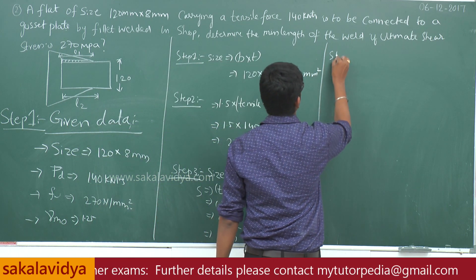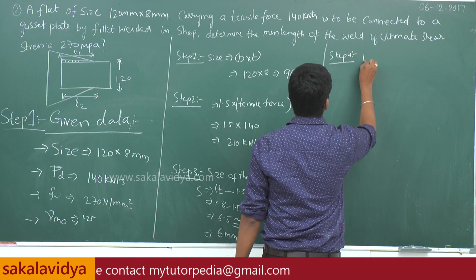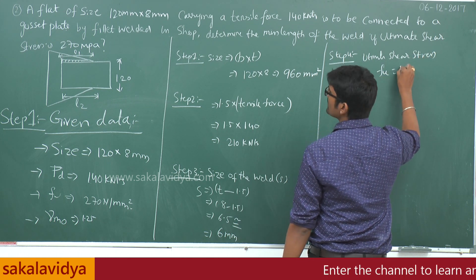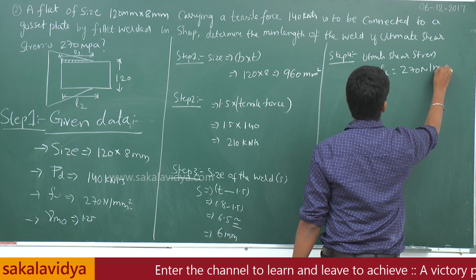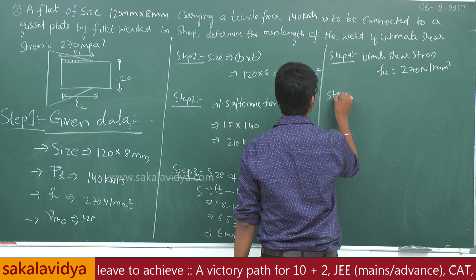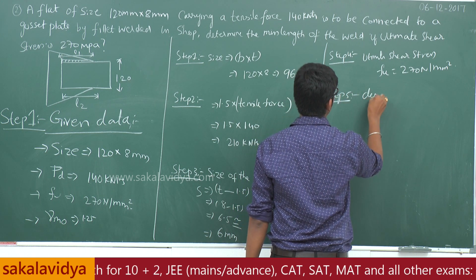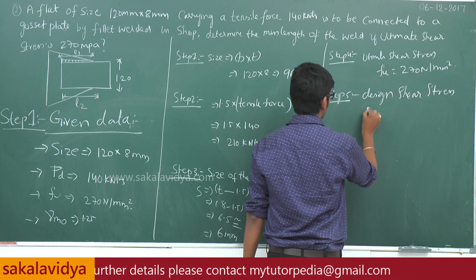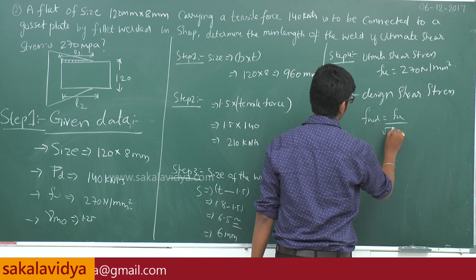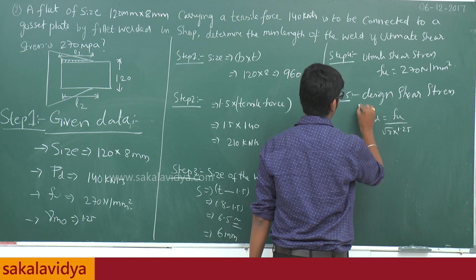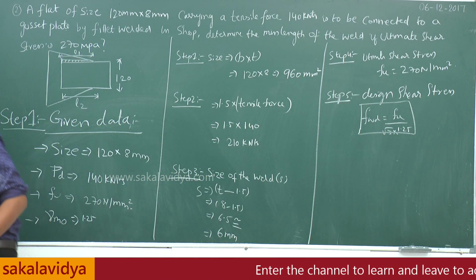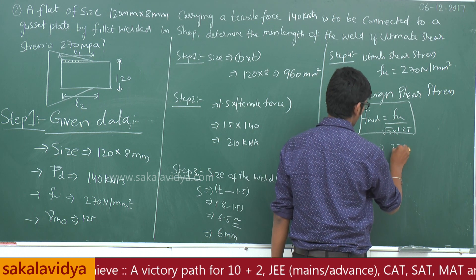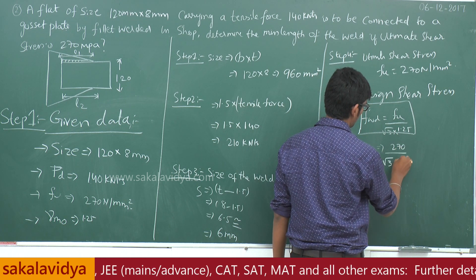Step 4: Ultimate shear stress FU is equal to 270 N per mm square. Step 5: Design shear stress FWD is equal to FU divided by root 3 into 1.25. So FWD equals 270 divided by root 3 into 1.25.